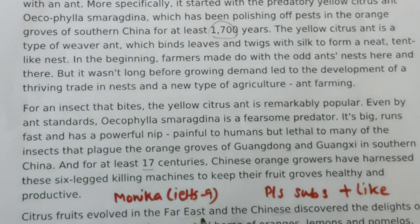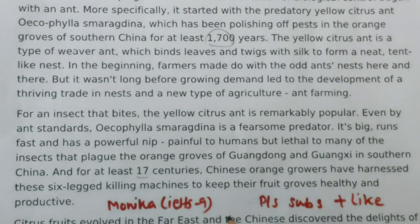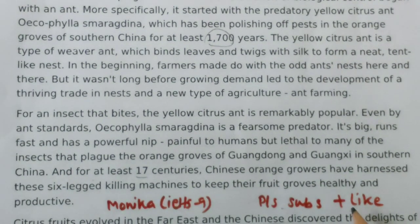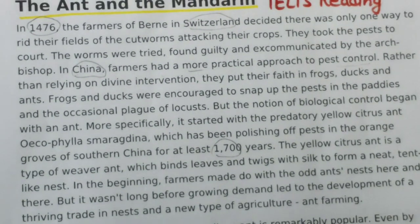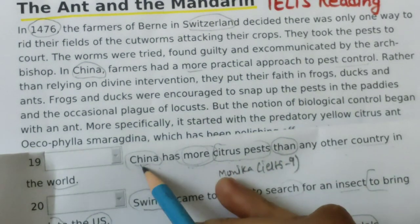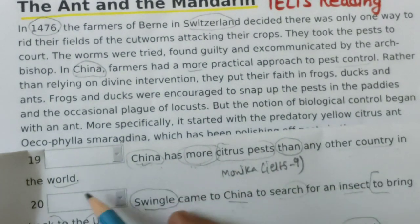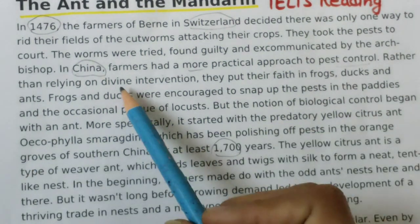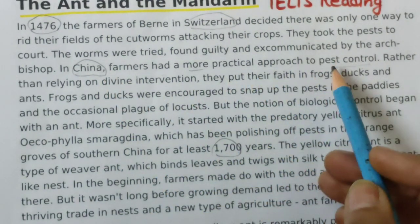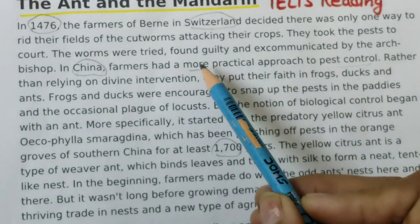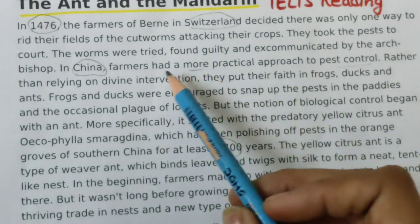Let's go to the location now. To find the location of this question statement, we will try to find keywords: China, citrus pest, and any other country name or 'world.' Here we find 'China had a more practical approach to pest control,' but in the previous video I realized this is just about pest control in general, not citrus pest specifically.